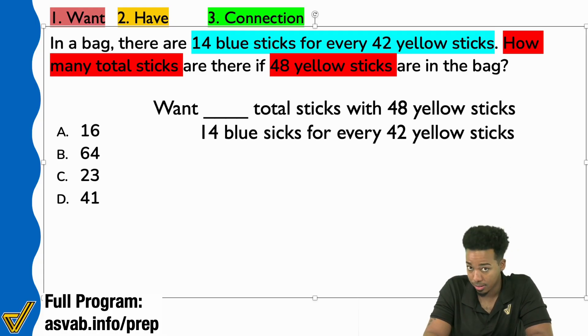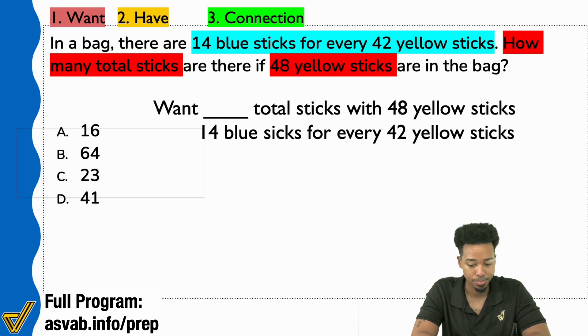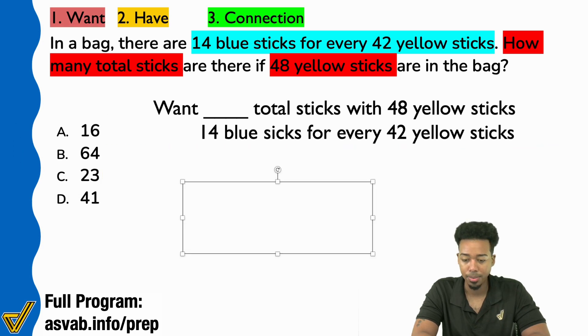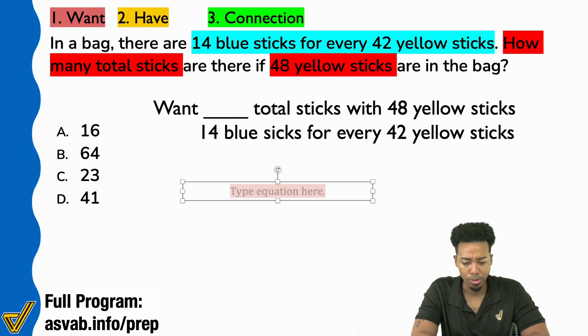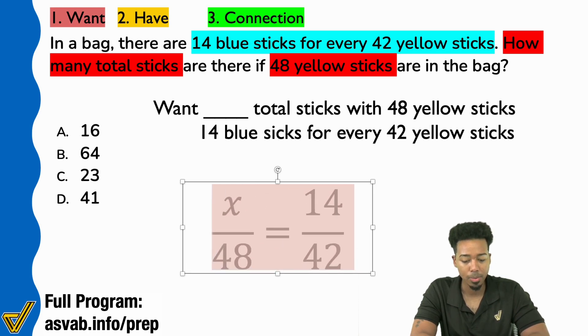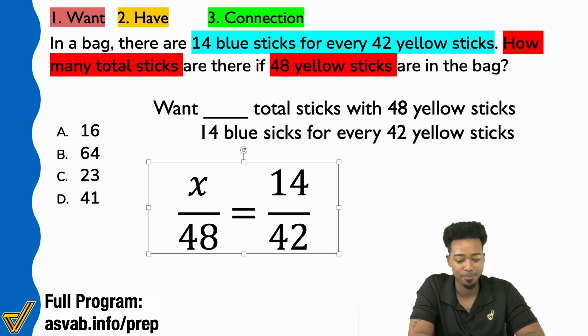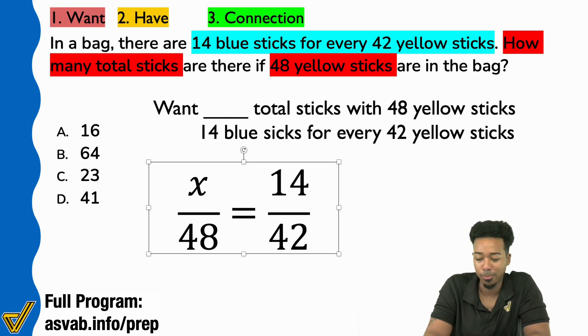So let's understand why the whole 'compare the same things in the same way' is important. Watch this. If I were to set this up now and use another text box, let's do that. And if I were to make an equation, I'll use x over 48 equals 14 over 42. Let me make that bigger so everybody can see. Everybody, was this your setup? Did your setup look something like that: x over 48 equals 14 over 42?